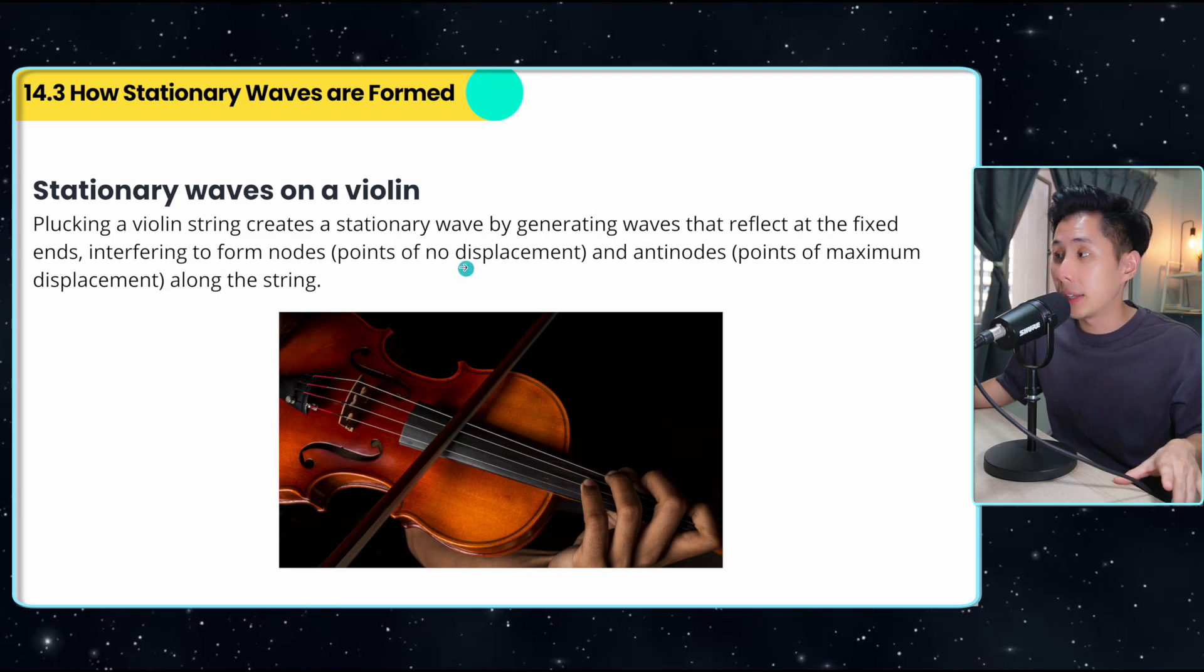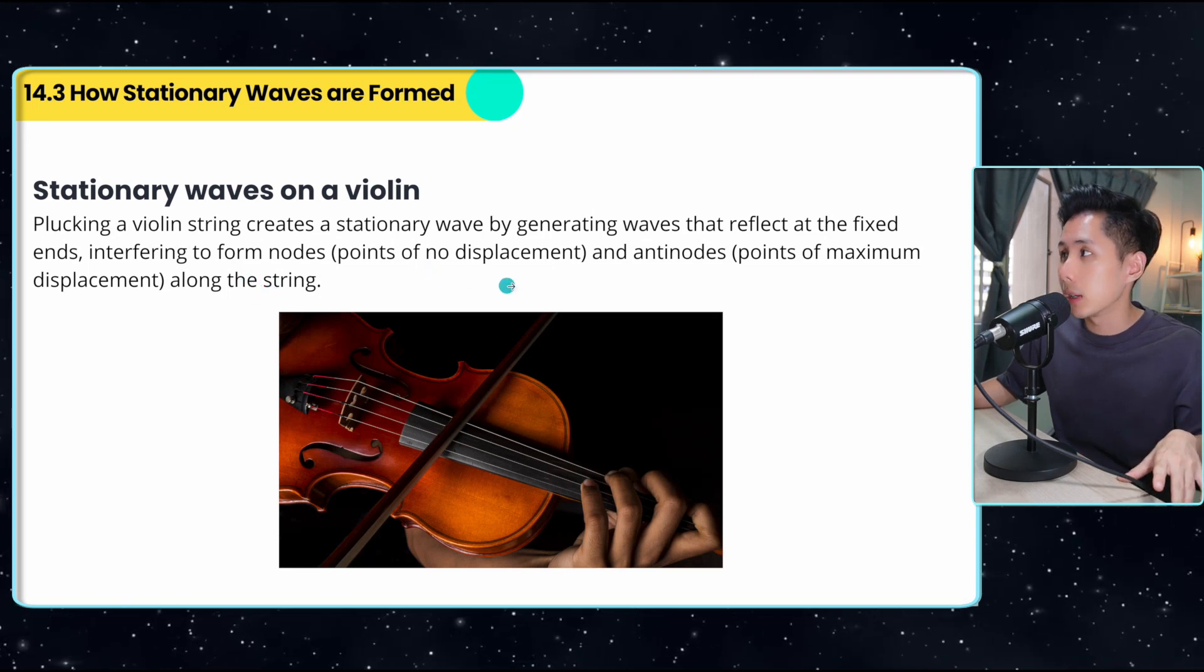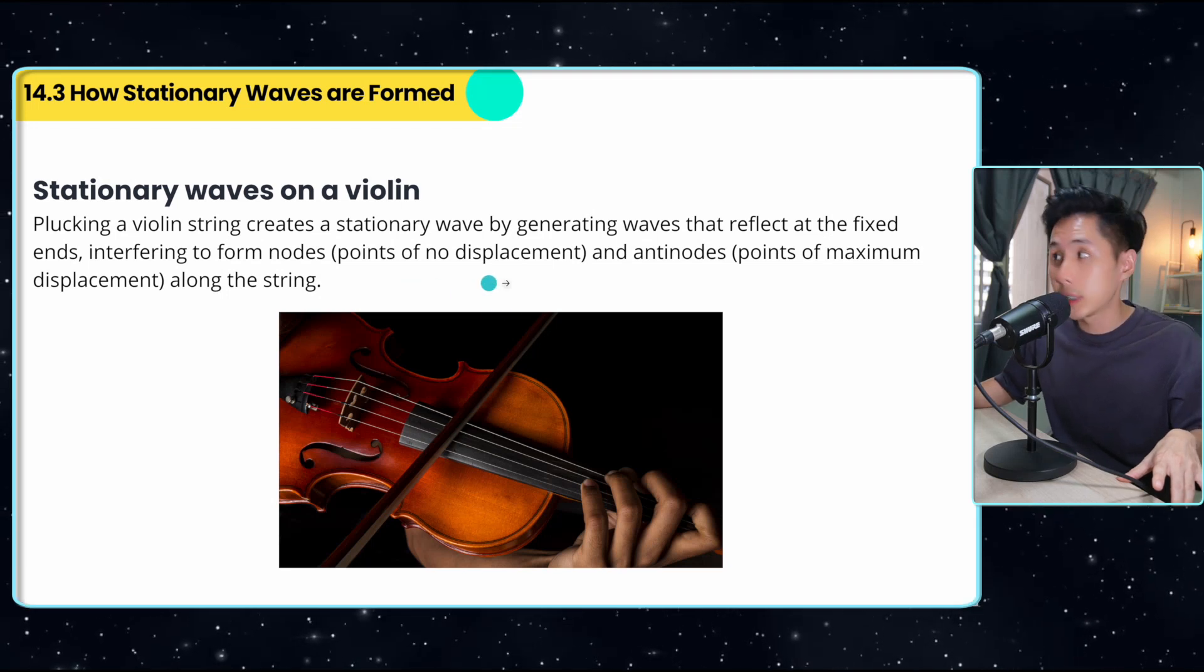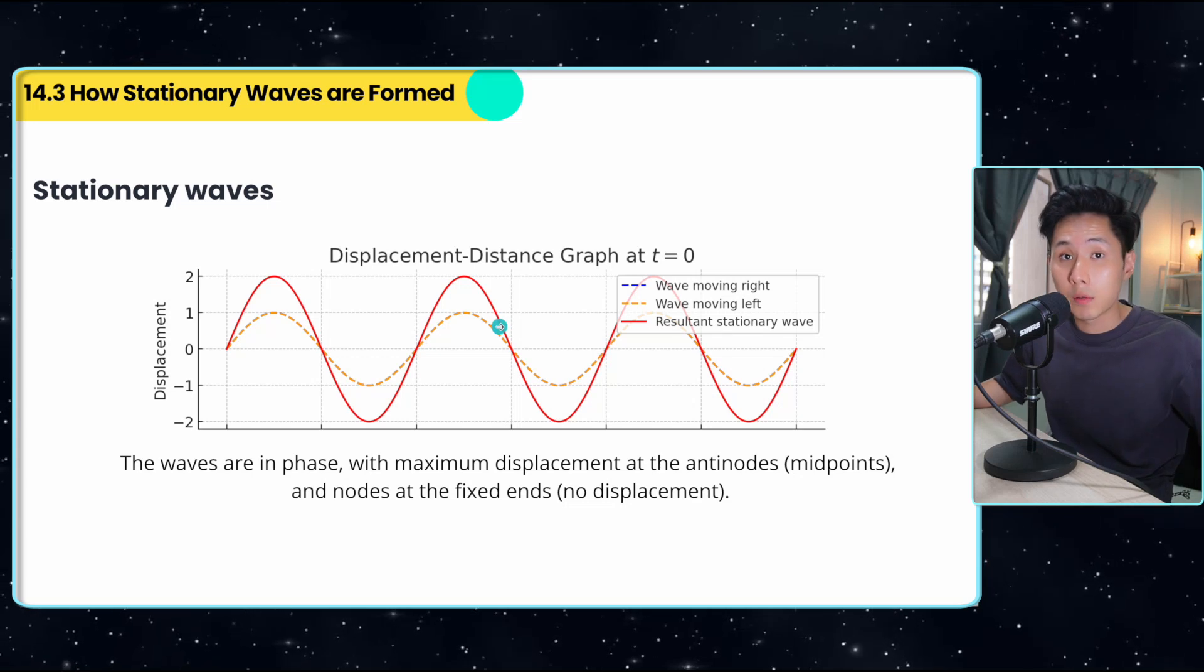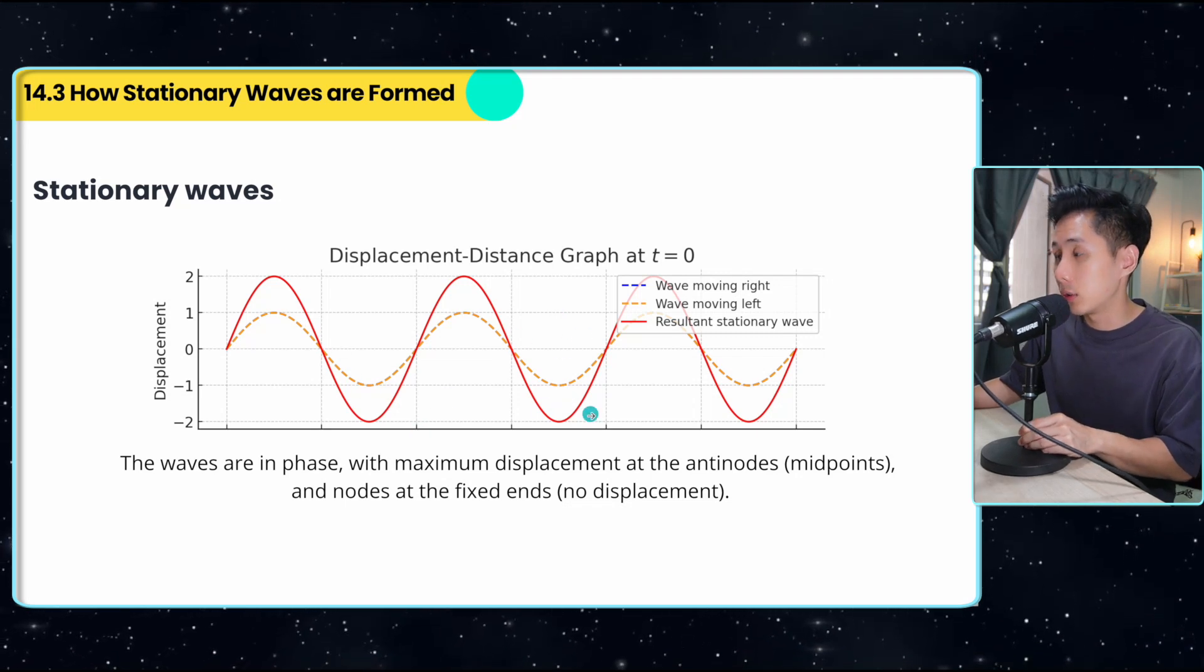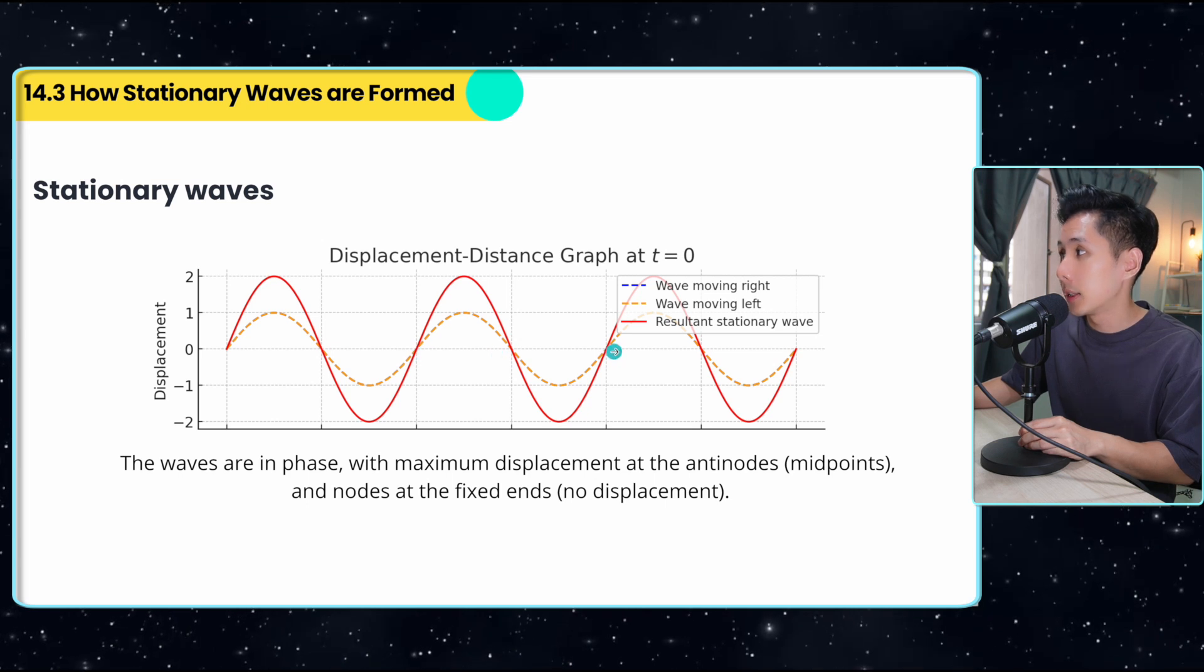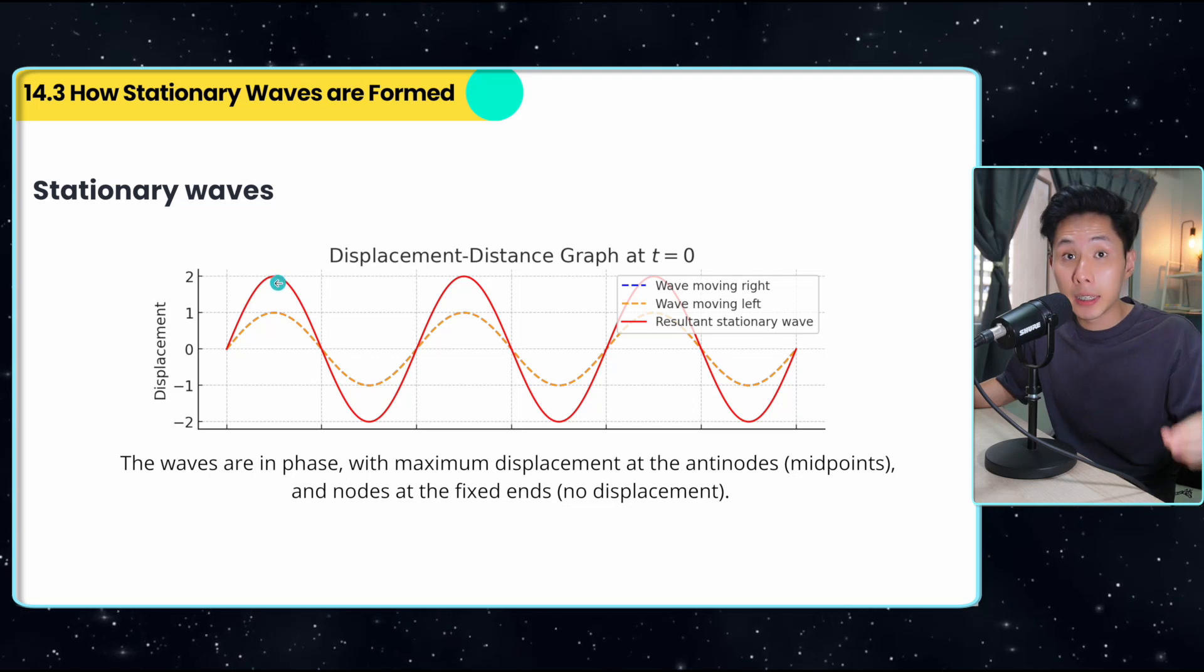Now stationary wave on a violin - I'm going to use this as an example because I'm also a guitar player. So when you're plucking a violin string, you are creating a stationary wave by generating wave that reflect at the fixed end, which is around this end, interfering to form nodes and antinodes. I'm going to show you the timeline of how stationary wave works from t equals zero to t equal to the period. So the waves are in phase here at t equal to zero. That's why you can see that there is constructive interference at the antinodes. And nodes is over here - no displacement. That's when the two waves are in phase. That's why we have a resulting wave that is higher in terms of its amplitude.